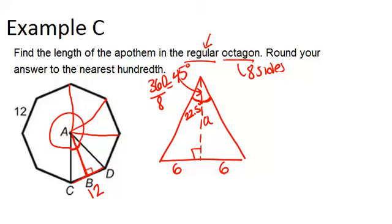So now if we just focus on the left side, this right triangle, we could use trigonometry to help us solve for our missing side, the apothem.